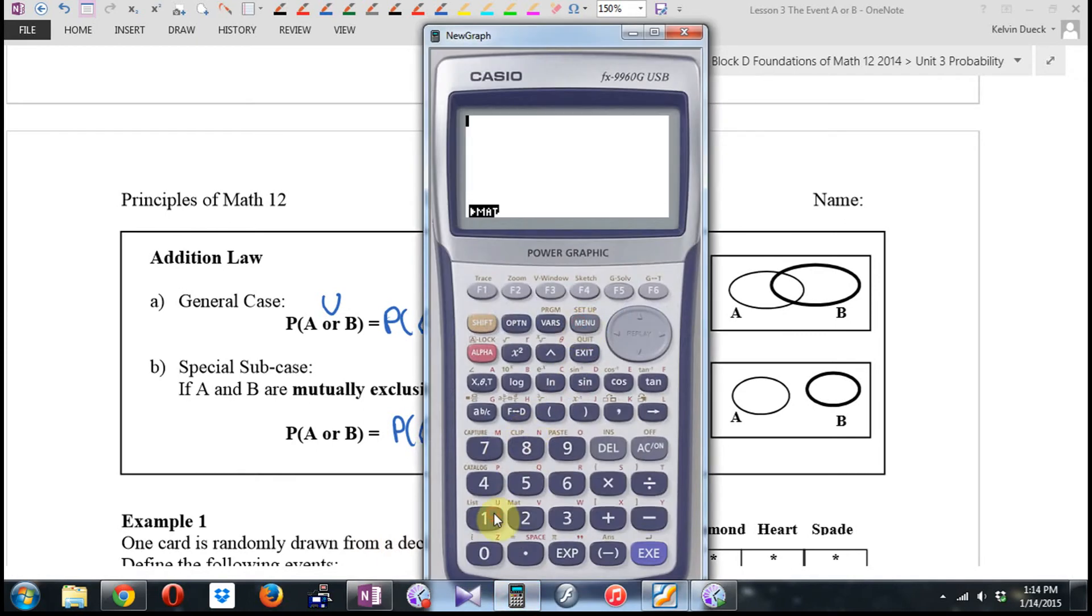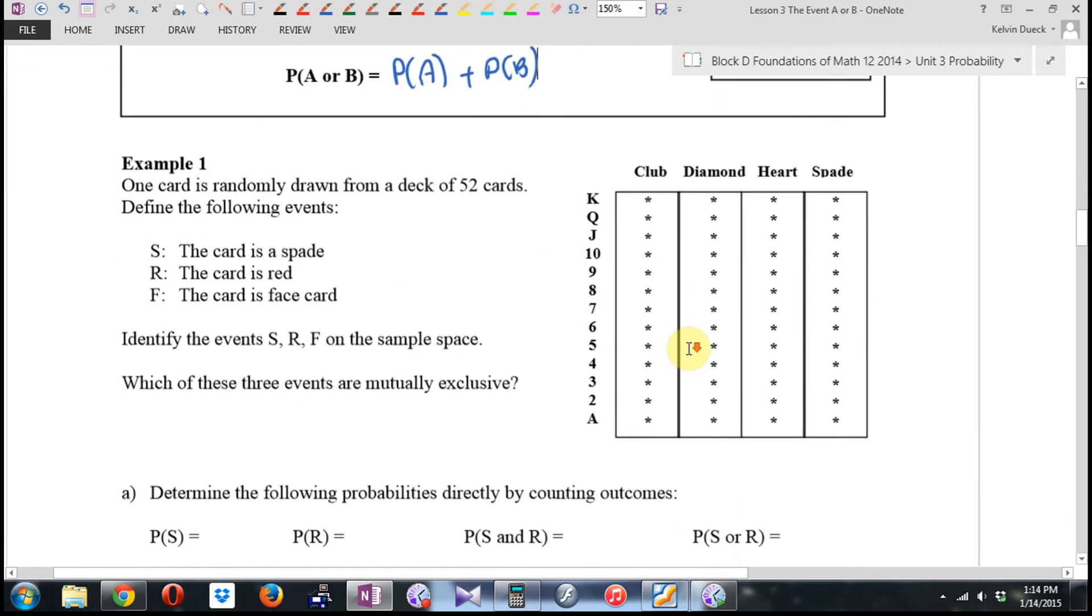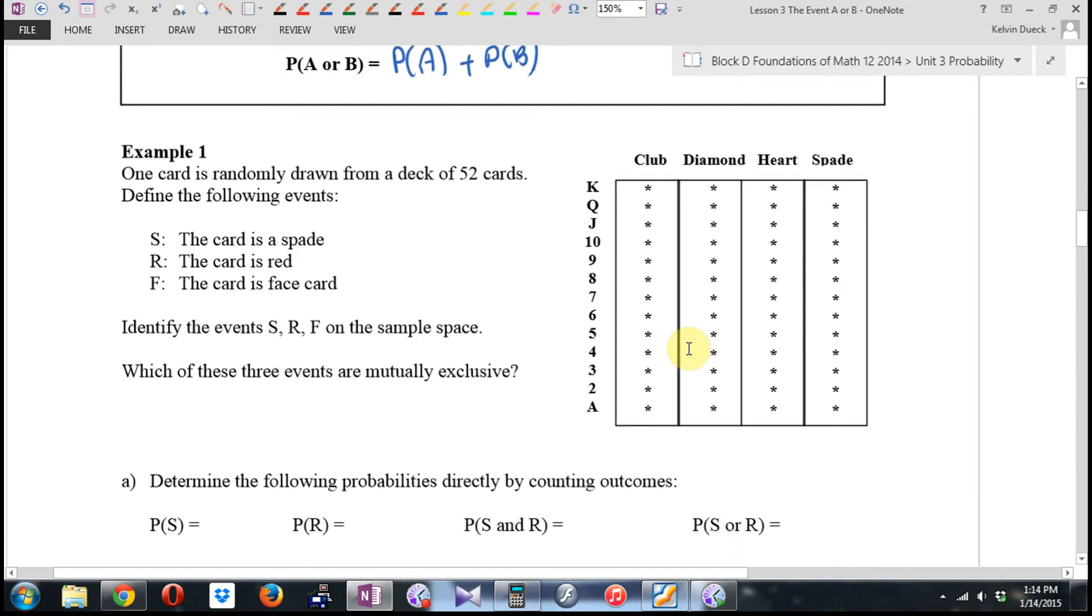If each of the 13 outcomes in the sample space is equally likely, state the probabilities by counting. What's the probability of A? It's out of 13. What's the probability of B? Three. What's the probability of A or B? Seven. What's the probability of A and B? Zero. No overlap. Then it asks, what's the relationship between these numbers? Or means add. What if there's overlap?